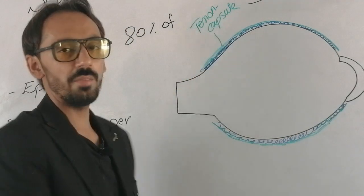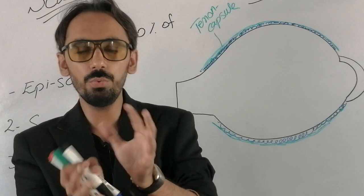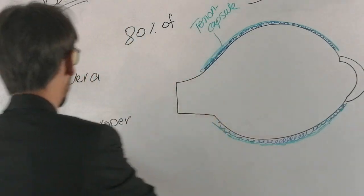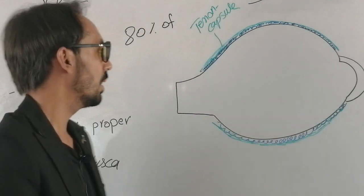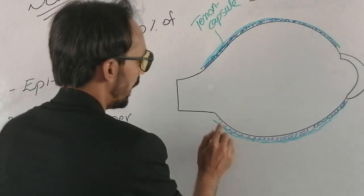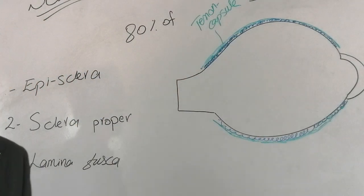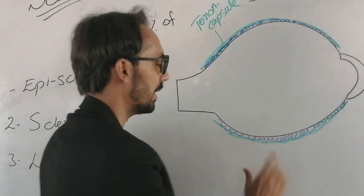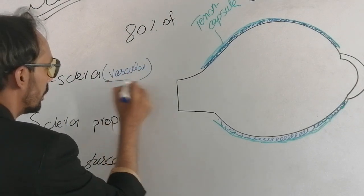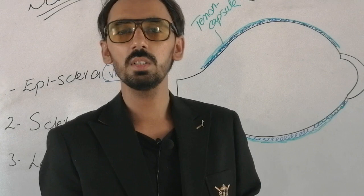Beneath the Tenon's capsule lies the episclera, which is a vascular layer. Within the Tenon's capsule, the whole eyeball is able to move. The episclera, marked with the blue marker, is the first layer of the sclera. Being a vascular layer, the episclera is responsible for providing nutrition to the sclera.